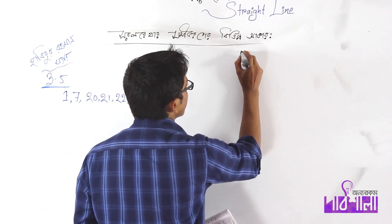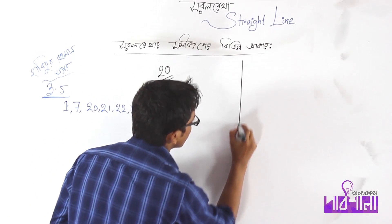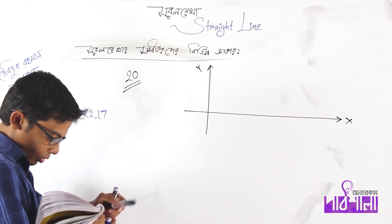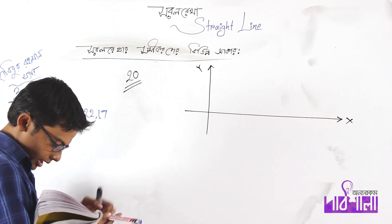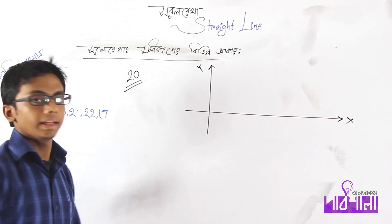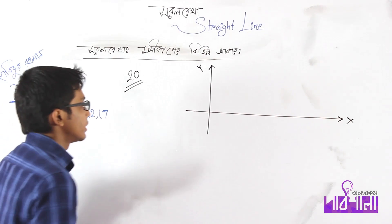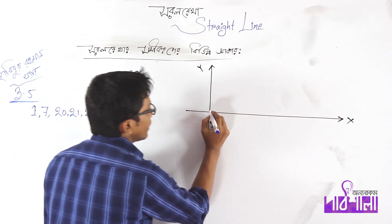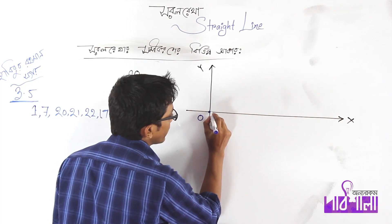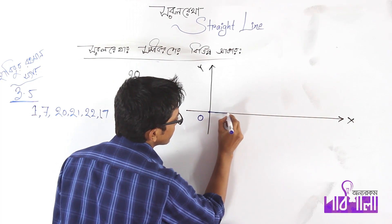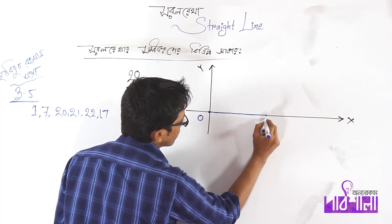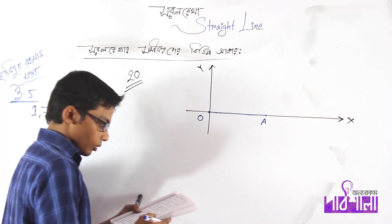What do we have to do? We have to say that O, A, B, C. O, A, X — that means O, A, X. O, A, X. O, C. O, C.